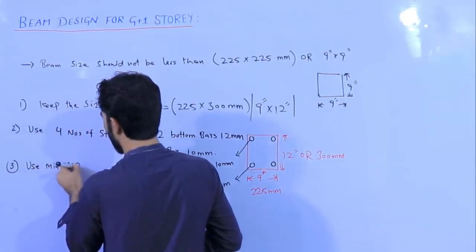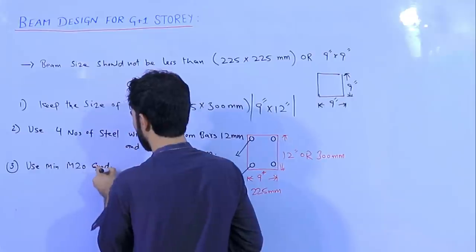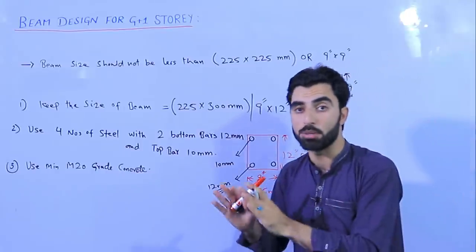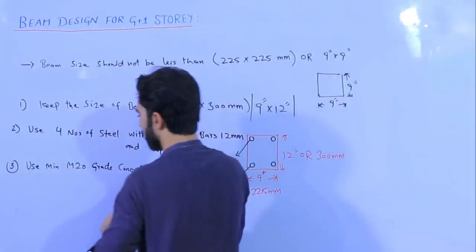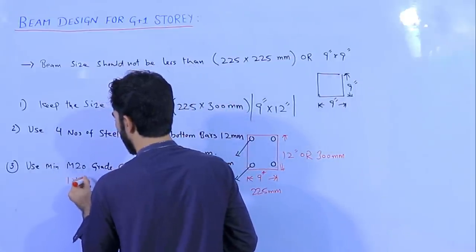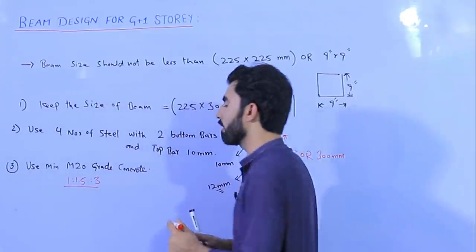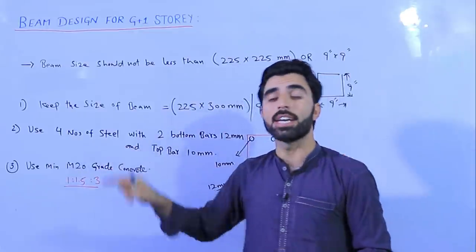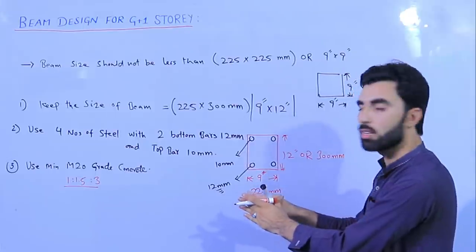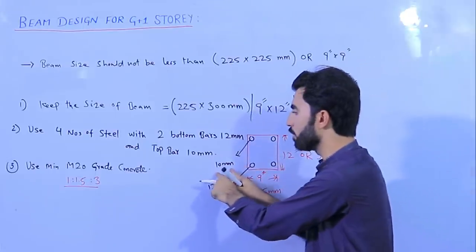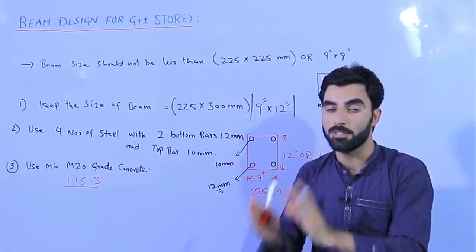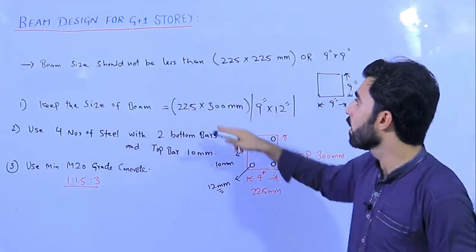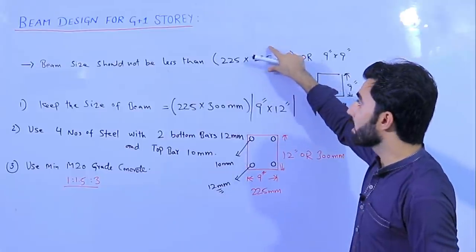Third point: use minimum M20 grade concrete. Especially for beams, columns, and slabs, I use M20 grade concrete, which has a mix ratio of 1:1.5:3 — one part cement, 1.5 parts sand, and three parts aggregate or crushed stone. When you use M20 grade concrete with four steel bars — 12 mm at bottom and 10 mm at top — the structure will not fail.